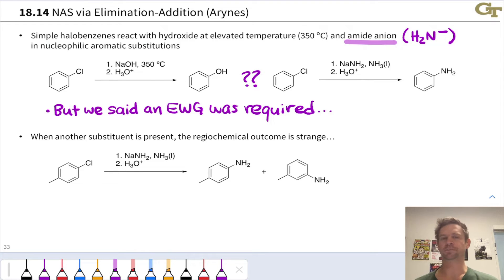Well, let's add a substituent to the ring to see if we can gain some more insight into this. On the bottom reaction here, we've got a paramethyl chlorobenzene. That paramethyl group is going to help us figure out what's going on, as we'll see.